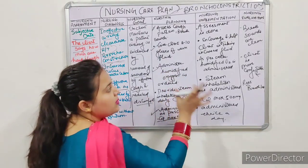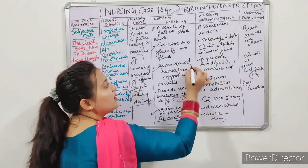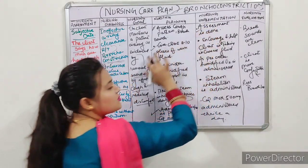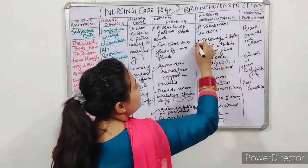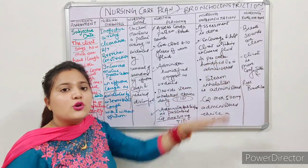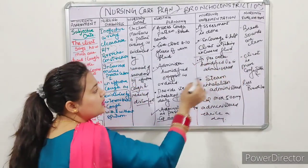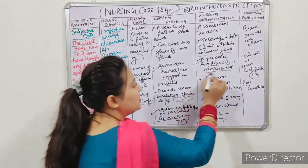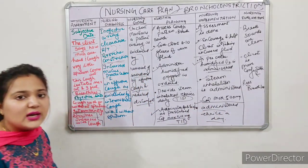Now implementation — whatever we planned, we have implemented. For students who have difficulty with English grammar: in planning you write 'administer,' but in implementation you write 'administered' — meaning we have already done it. Assessment is done. For 8-10 glasses of warm fluid — we cannot directly say we gave it; instead we encourage and motivate the patient to take 8-10 glasses of warm water. Humidified oxygen is administered. Steam inhalation is administered. Capsule Amoxicillin is administered.